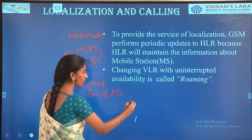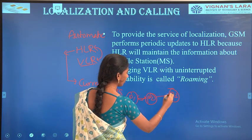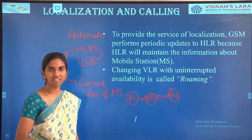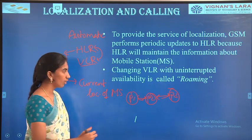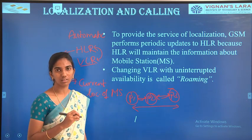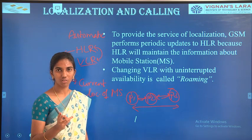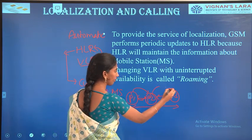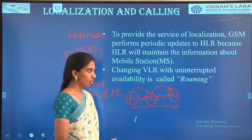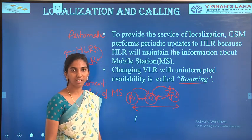Whenever you move continuously from one place to another, sometimes you may lose signal, but most of the time you will have signals. If there is uninterrupted availability of signals across states, that is called roaming. Roaming is with respect to state to state, not just local areas. If you move from one state to another and still have the ability to call or use your SIM card, that uninterrupted service is called roaming, and this is provided by GSM.